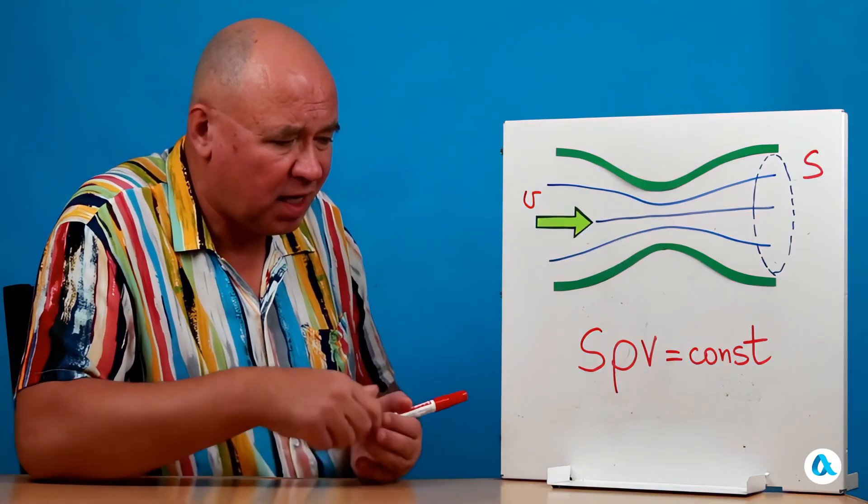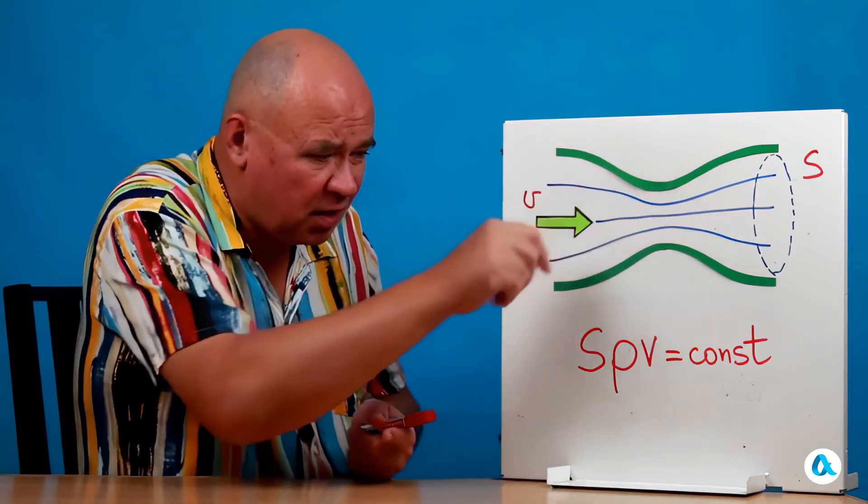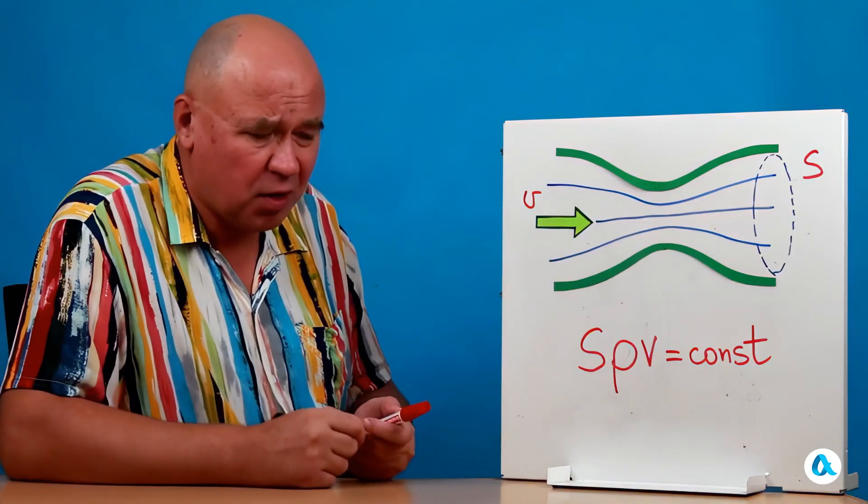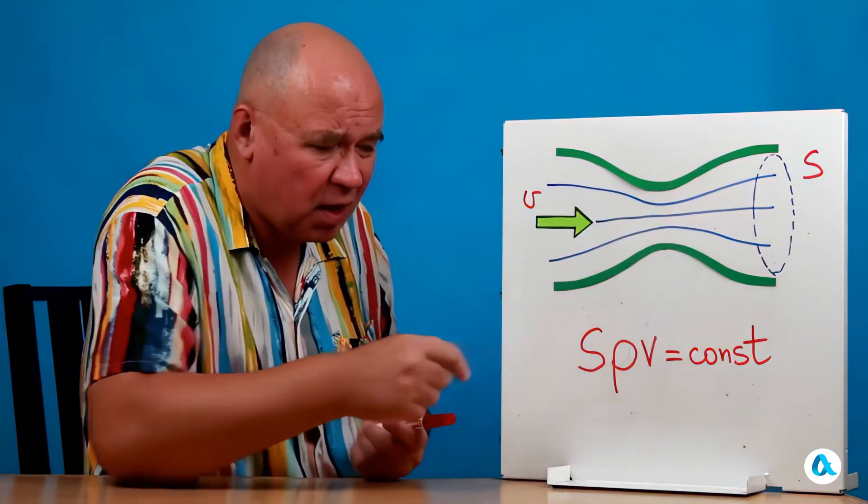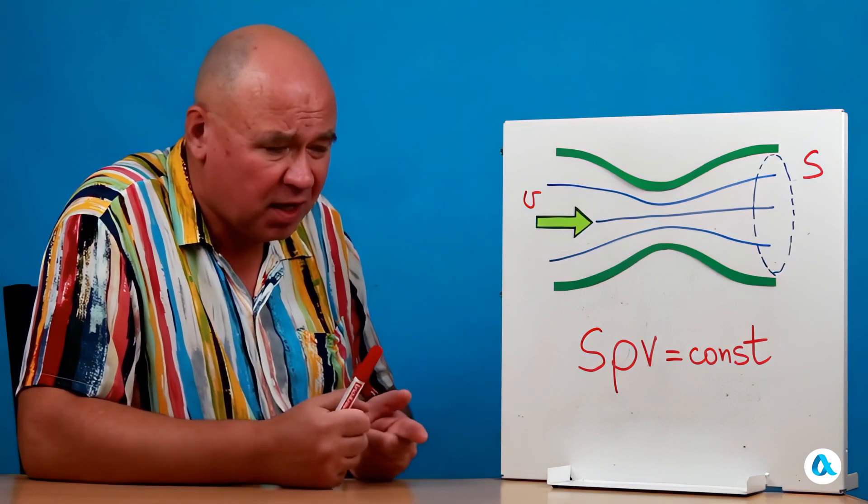Now, look, when the area decreases, the product ρV must increase proportionally. Conversely, when the area increases, the product ρV must decrease proportionally.